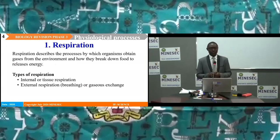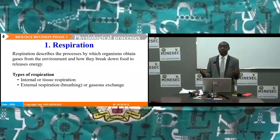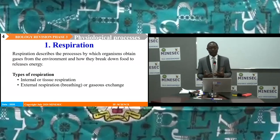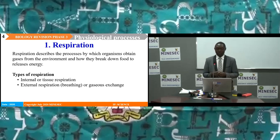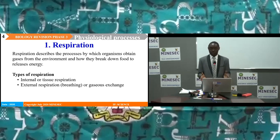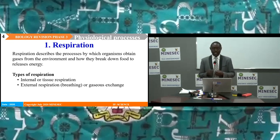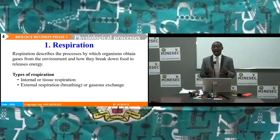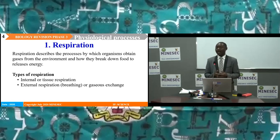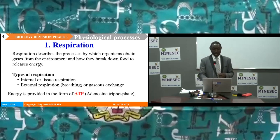Respiration describes the processes by which organisms obtain gases from the environment and how they break down food to release energy. From this definition, we distinguish two types of respiration: internal or tissue respiration, where food substances are broken down within the cells of the body to release energy; and external respiration, also called breathing or gaseous exchange, that occurs across the lungs in humans and across many other respiratory surfaces in other animals.